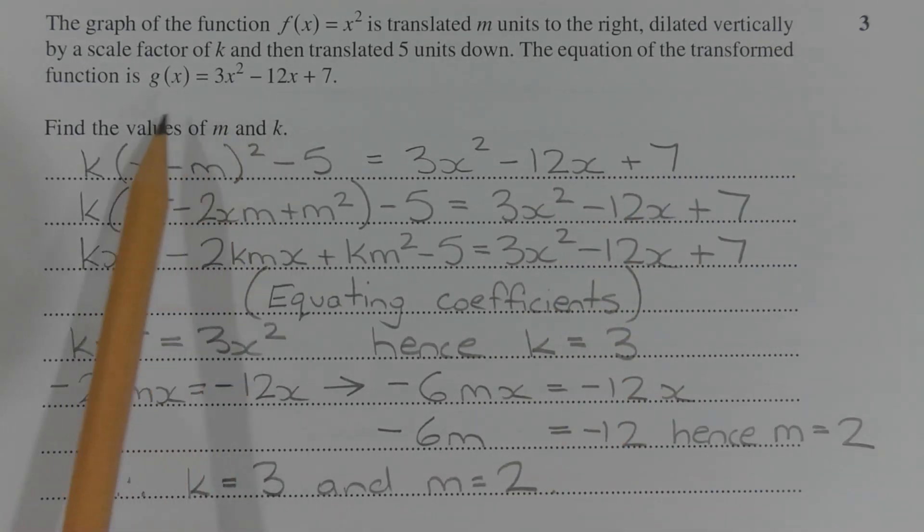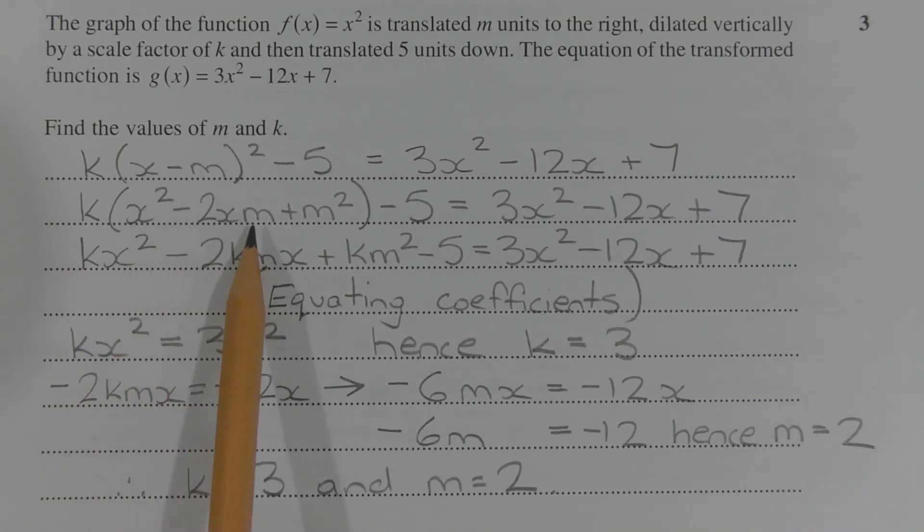Expanding the perfect square on the left hand side, we have k times x squared minus 2xm plus m squared minus 5 equals 3x squared minus 12x plus 7.